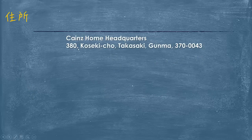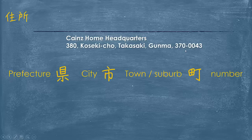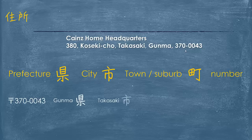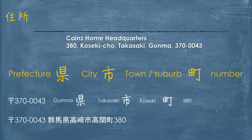In English we go from small to large area of land, but in Japanese it is the reverse — we start with the prefecture. We actually start with the yubin, the post code. So it starts with the yubin, then Gunma-ken, Takasaki-shi, Kouseki-cho, and then the number. So: Gunma-ken, Takasaki-shi, Kouseki-cho.